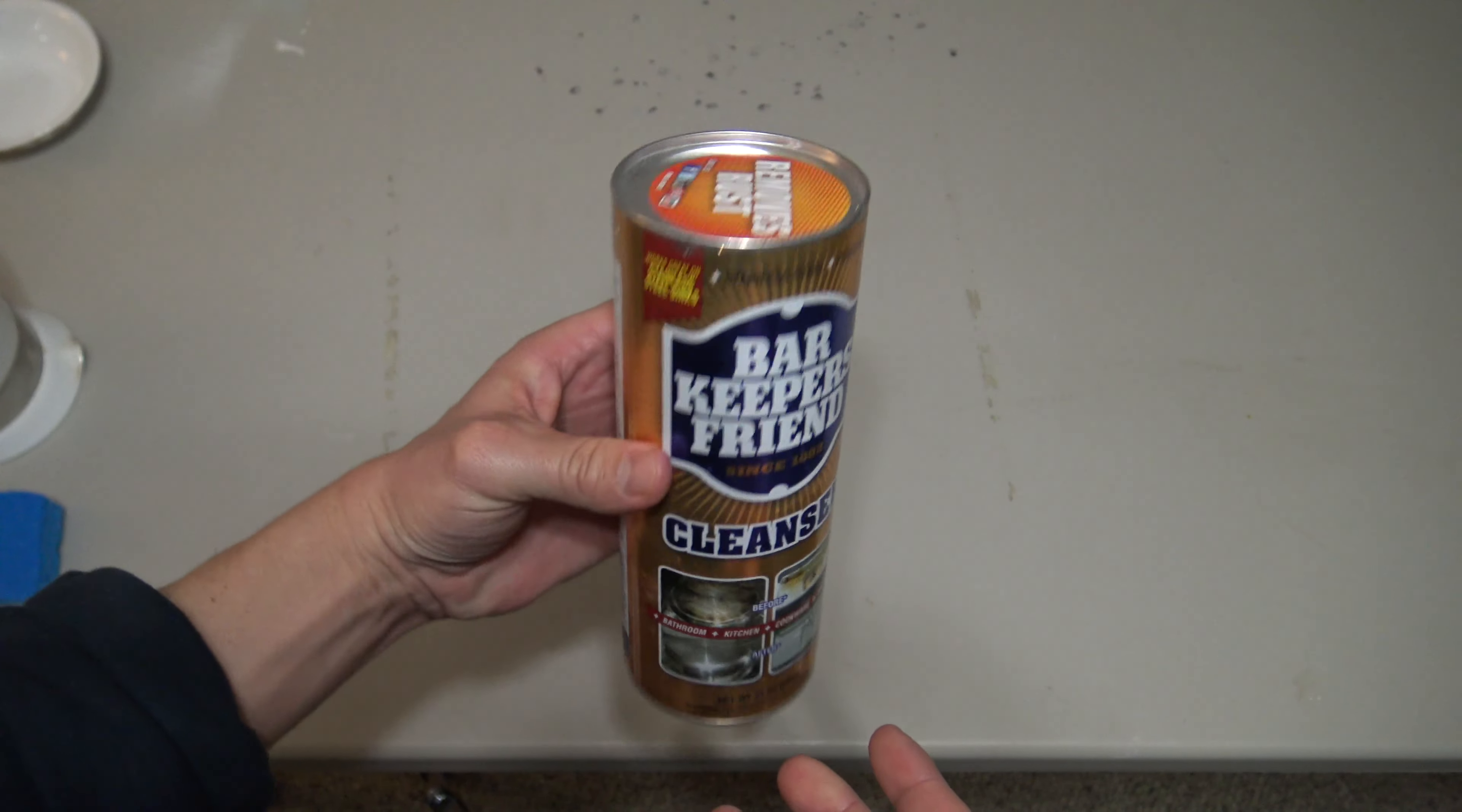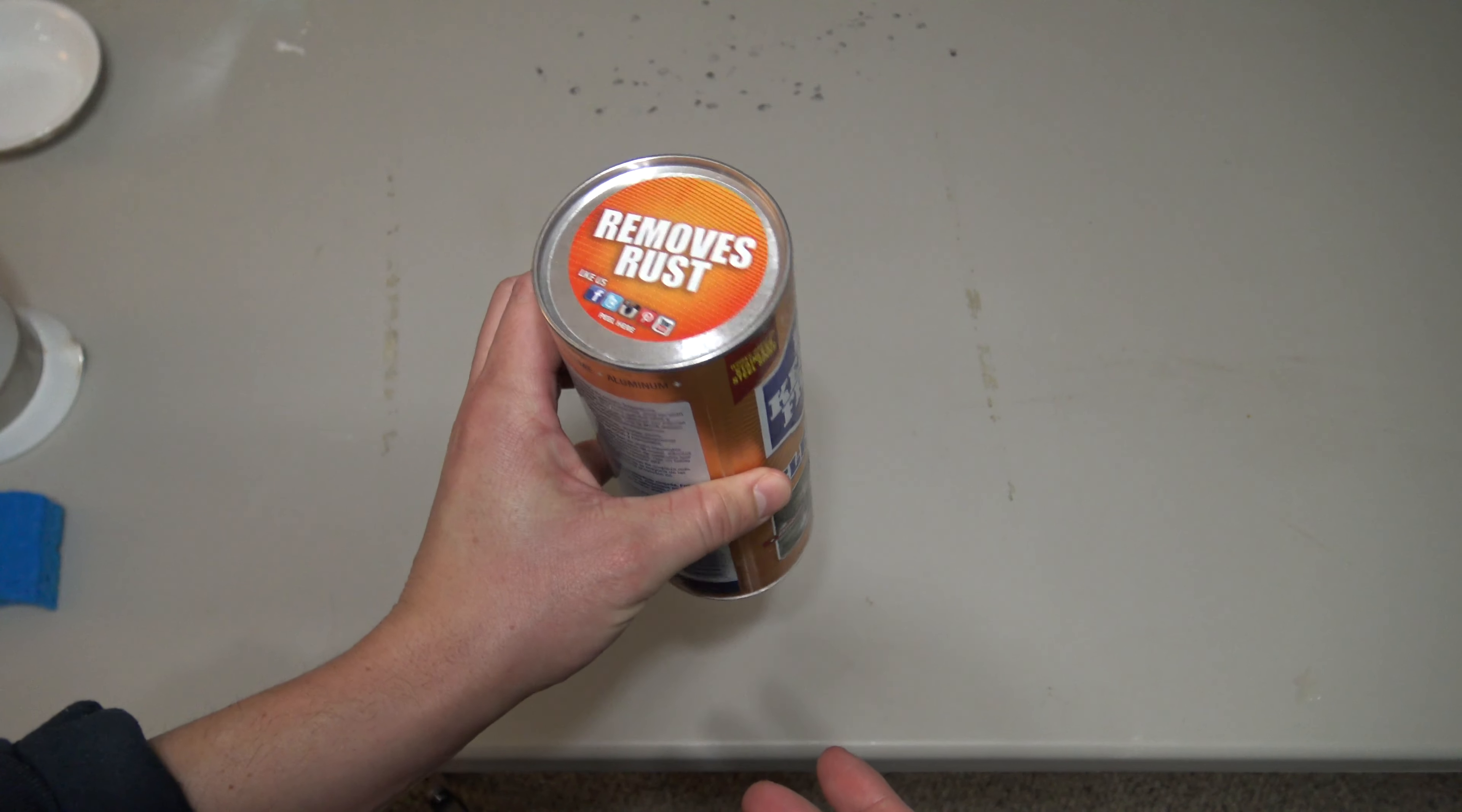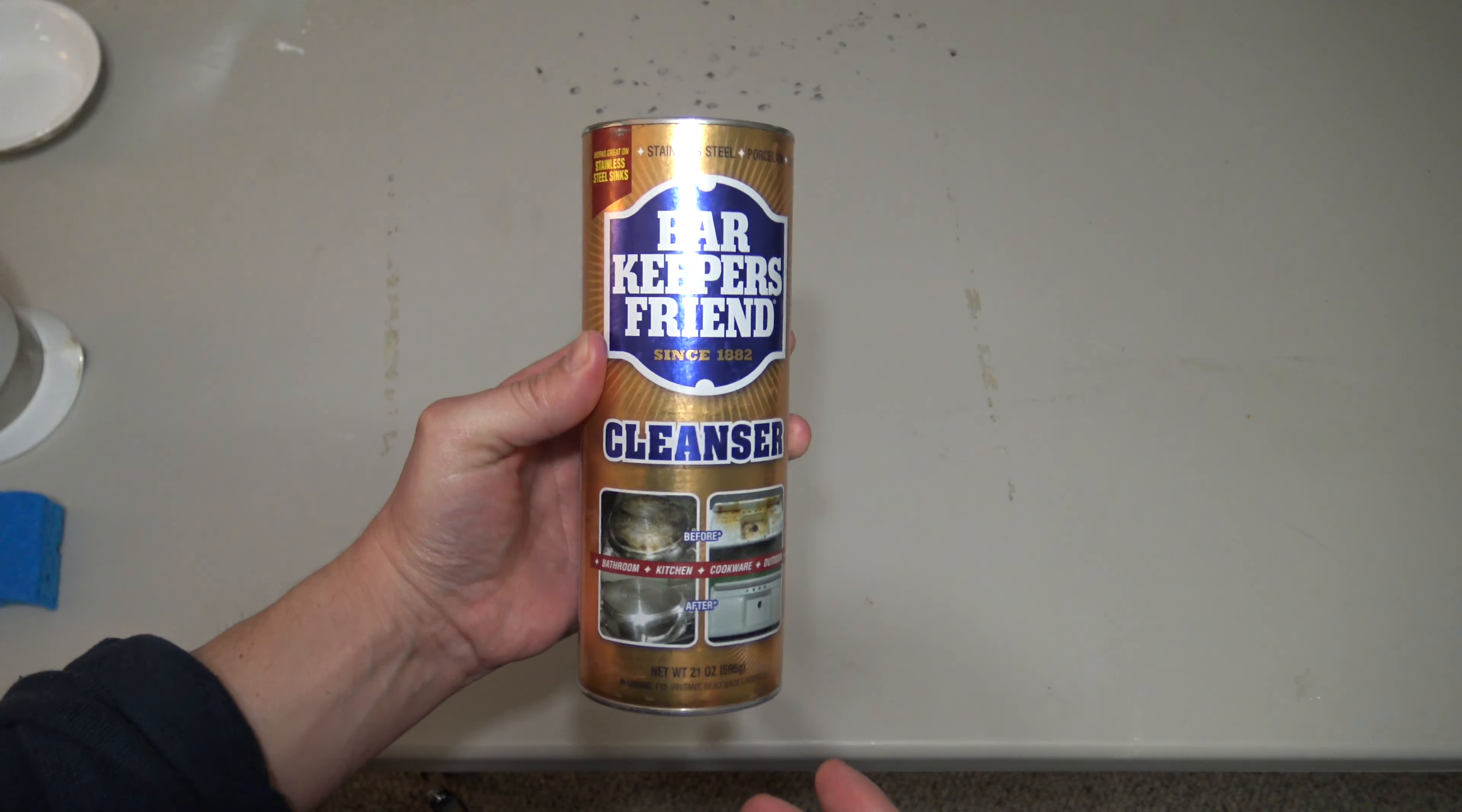You'll need a can of Bar Keeper's Friend. Make sure it's the powder, as it works better than the liquid version. You'll also need a sponge.